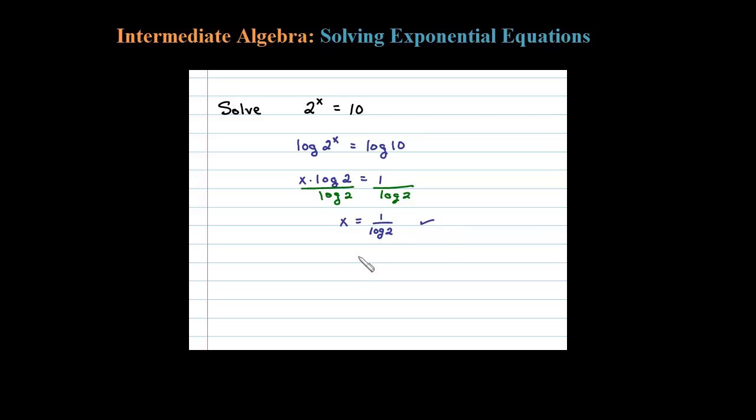Now, you might be asked to write an approximate answer, in which case you would just do that on a calculator. And 1 divided by log of 2 comes out to about 3.3219, if I round that off to 4 places.